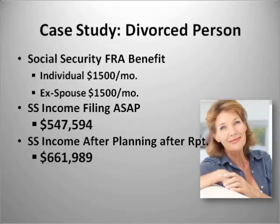Looking at a divorced woman whose full retirement age is 66, her benefit is $1,500 a month and her ex-spouse's benefit was also $1,500 a month. If she filed as soon as possible, her benefit would be $547,000. But after reviewing the report and integrating a spousal or ex-spouse benefit, her lifetime benefit increased substantially to $661,000.